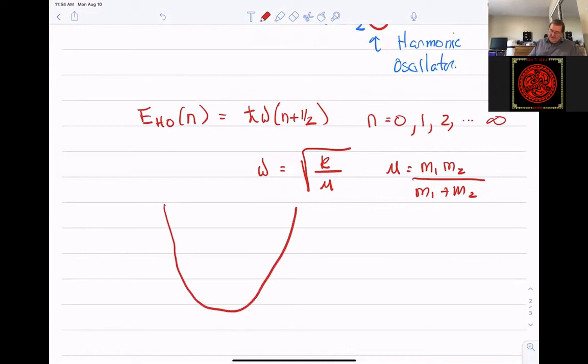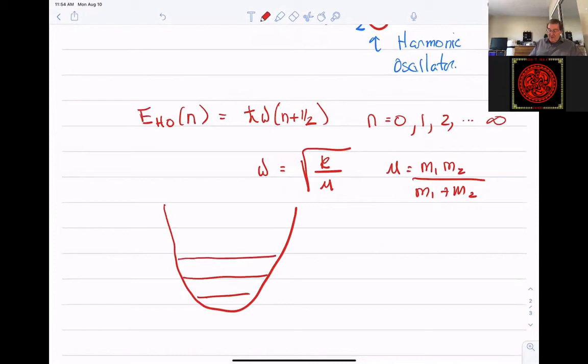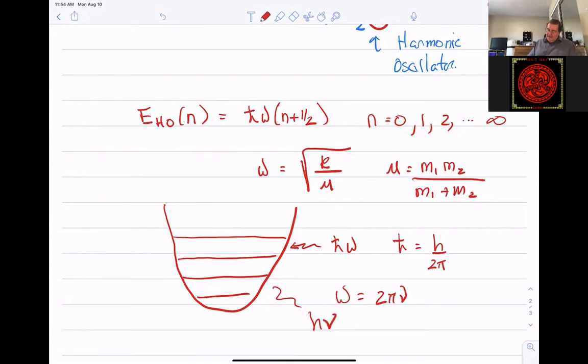Or if you have a homonuclear diatomic, then the reduced mass is half of the mass of one of the atoms. But what does this say? It says for a true harmonic oscillator, I should really have energy levels that are equally spaced. And the spacing between those levels is H bar omega. And by the way, H bar is H over 2 pi. Omega is a frequency in radians per second, but in terms of cycles per second it's 2 pi nu. So I could just as easily write this energy spacing as H nu, where nu equals 1 over 2 pi times the square root of k over mu.